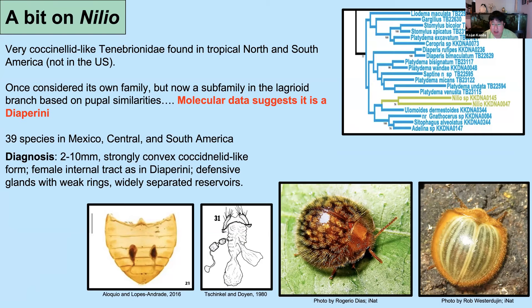Nilio is a very coccinellid-like tenebrionid found in North and South America — not in the US but picked up in more tropical areas of Mexico. This genus used to be considered its own family Nilionidae, then a subfamily in the lagrioid branch based on similarities in characters to Lagriinae, but molecular data now shows it probably just belongs within the Diaperini. There are 39 species in Mexico, Central, and South America. The molecular data is supported by morphology too: they share the weird sclerotized capsule-like structure leading to the spermatheca, and their defensive glands are really widely separated and somewhat enlarged sacs.